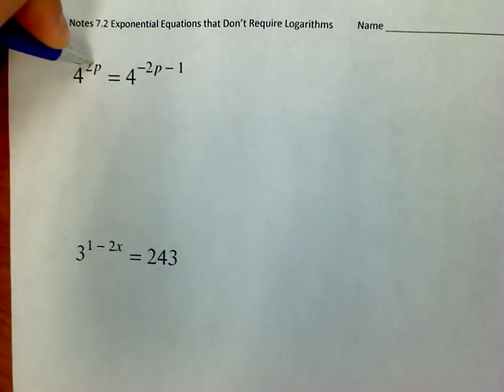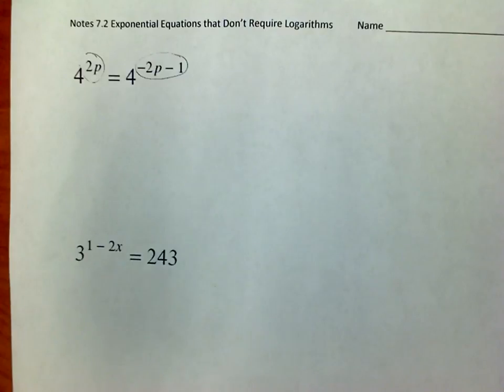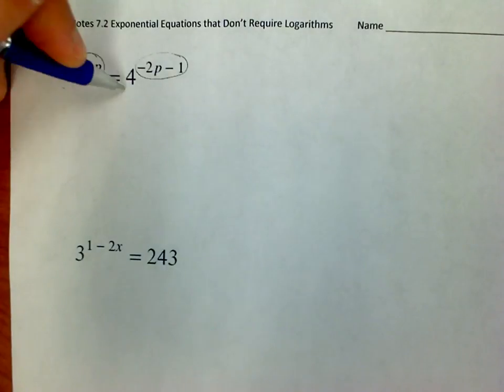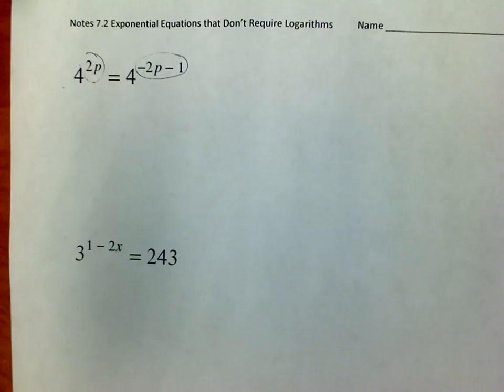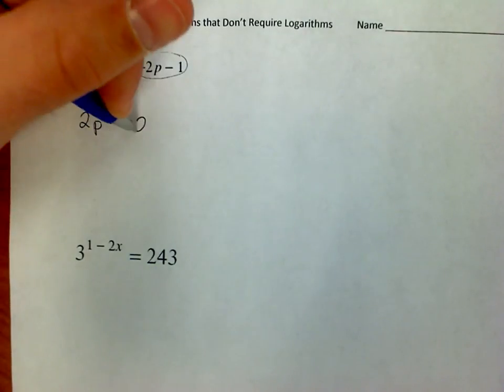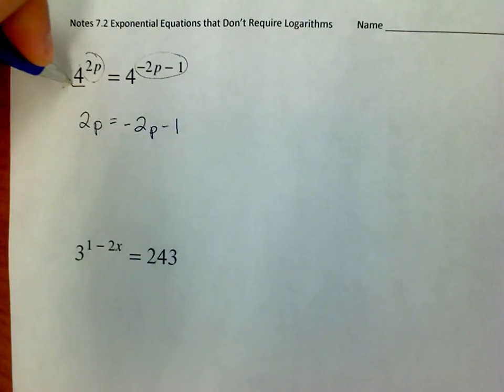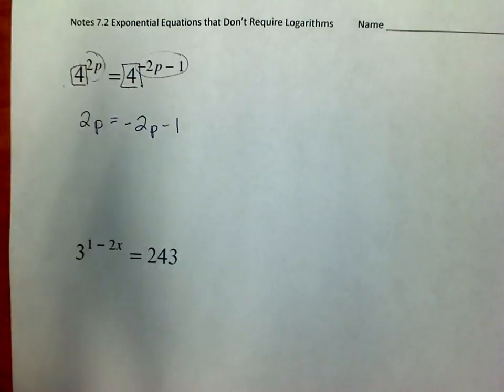If I have 4 raised to the 2p power and 4 raised to the negative 2p minus 1 power, then the only way that the left side and the right side are equal to each other is if those exponents are the same. So in other words, what I can do is I can say, if 4 raised to this side and 4 raised to that side are the same thing, then the exponents, these two parts, must be the same as each other. And that's only the case if I have the same number here. The 4 and the 4 are the same.